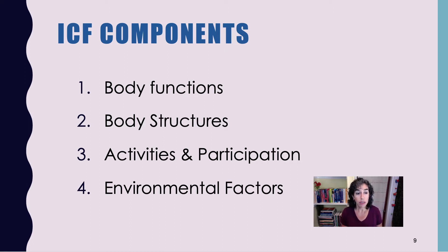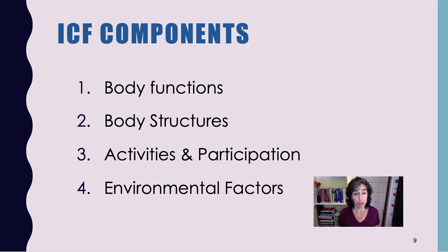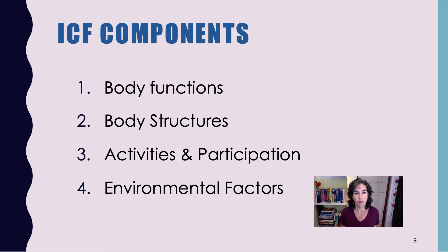The second factor is body structures, which concern the anatomical parts of the body. They are also coded from no impairment to complete impairment. The third part is activities and participation. The ICF looks at actions taken by individuals, called the individual perspective, and also a person's involvement in a life situation, described as a societal perspective. There's also the idea of activities — the things we're doing — and then participation, meaning how are we involved in the things that we're doing.